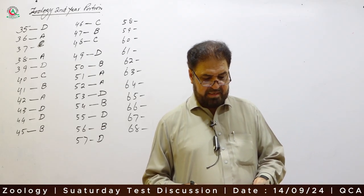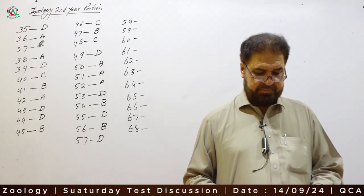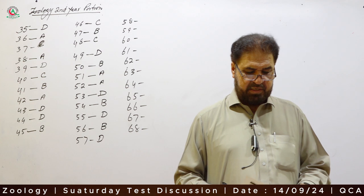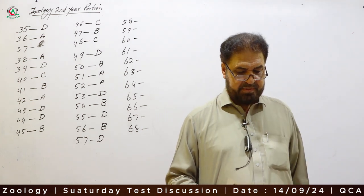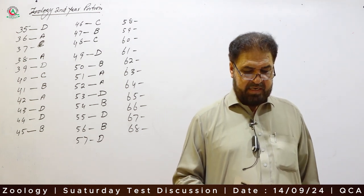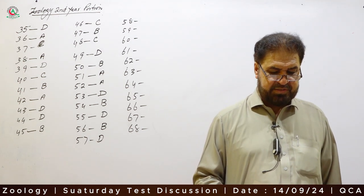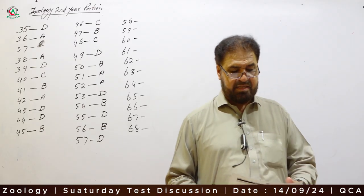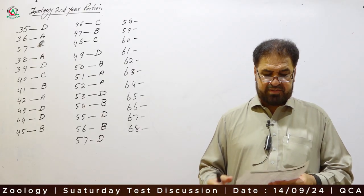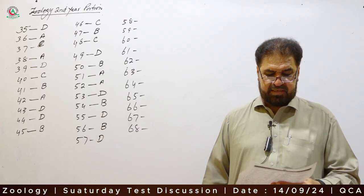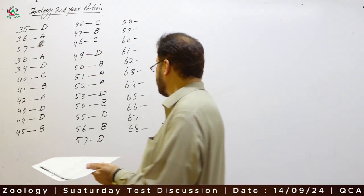Question 58: Suprarenal glands are commonly known as — thyroid gland, parathyroid gland, gonads, or adrenal gland? Adrenal glands are also known as suprarenal glands. Option C is correct.